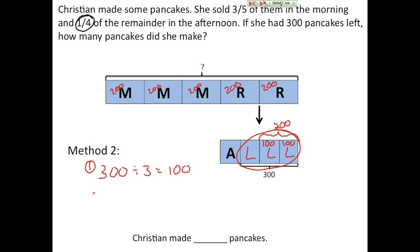My second step would be then to multiply 200 times five, because I have five units in that first bar, which equals 1000. So I'm going to cross out the question mark, write 1000, and then I'll put it in my answer and check to make sure that it is reasonable. So Christian made 1000 pancakes.